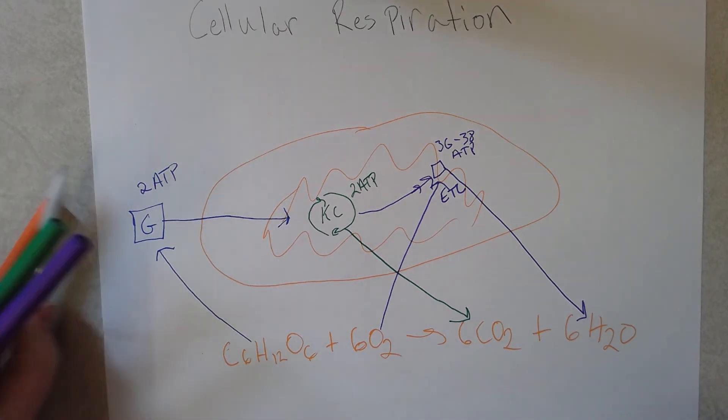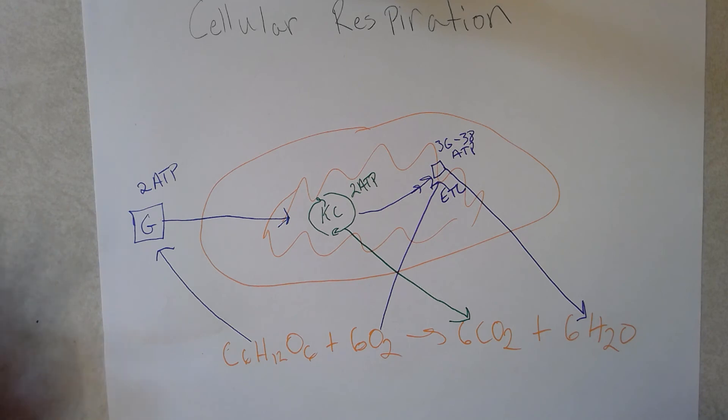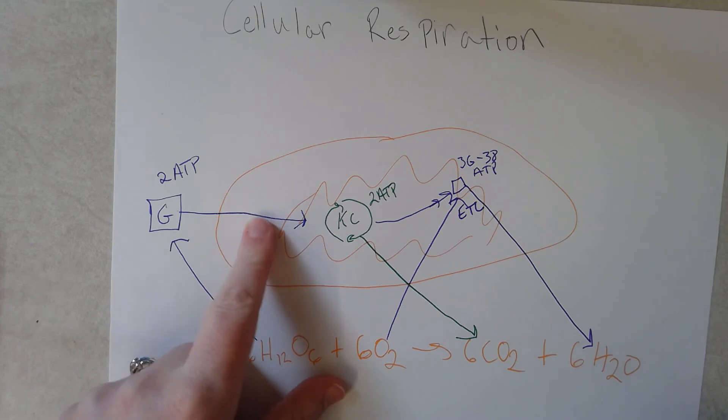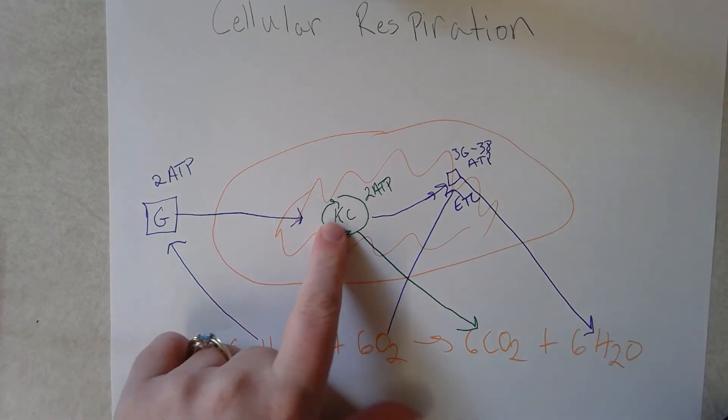And that's something that you're going to have to know and be familiar with. So the glucose starts by going into glycolysis, ATP is generated, and the products of glycolysis move into the Krebs cycle.